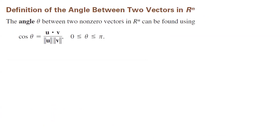Now, how do we define the angle between two vectors? The angle theta between two non-zero vectors in n-space can be found using cosine theta equals the dot product between u and v divided by the product of their magnitudes. Note that we restrict theta between zero and pi, inclusive.